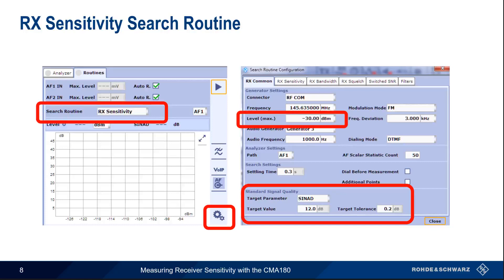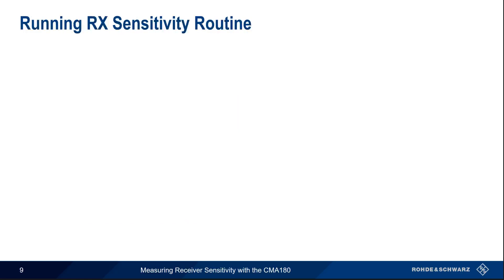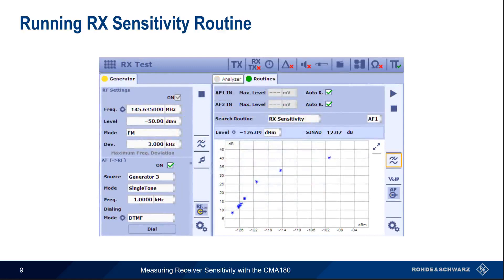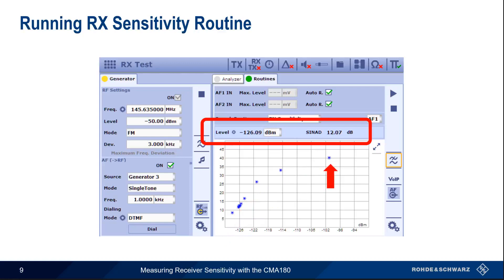Once the appropriate values have been configured, clicking Start will begin the test. The CMA-180 will automatically step through different RF power levels and stop when the configured SINAD value is found, plus or minus the target tolerance. In addition to a numerical display of level and SINAD, the CMA-180 also displays a graph showing SINAD as a function of input power. Here, in addition to reading off the 12 dB SINAD value, we can also read off other values — for example, a SINAD of 25 dB, which corresponds to full quieting in FM, occurs at an input power of about minus 121 dBm.